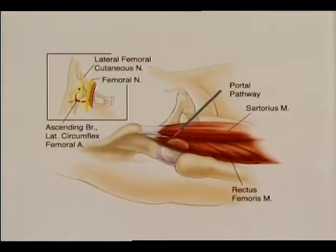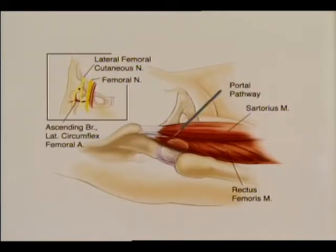The cannula penetrates the sartorius and rectus femoris before entering the anterior capsule. The direction of the portal runs roughly tangential to the axis of the femoral nerve, lying only slightly closer at the level of the capsule, with a reported average minimum distance of 3.2 cm.